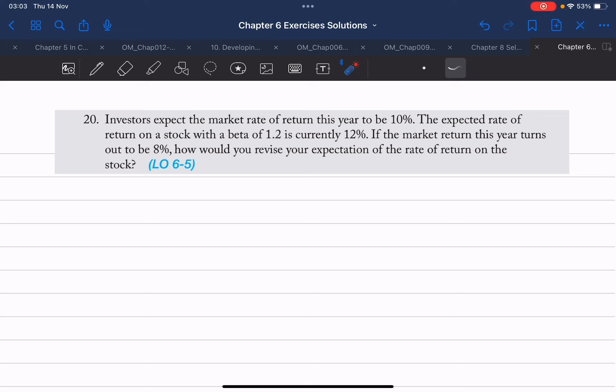So using that information, we now know that this particular stock moves a little bit more aggressively than the market. And since the market was expected to generate 10% but ended up only generating 8%, what would happen to the 12% that is expected for a return of that stock?